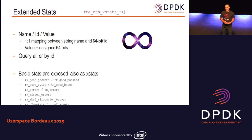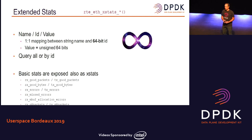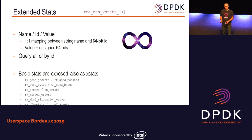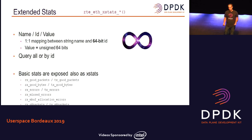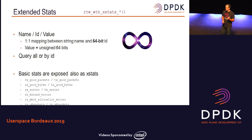I want to talk about another kind of statistic we have in DPDK, which is called extended statistics — xstat. This is pretty much the same as what you have with ETHtool with Linux drivers. What is xstat? There is a name for each statistic, there is an ID — a number — and a very important thing to note is that this ID is 64 bits, and there is a value which is also 64 bits. You can query all the statistics that the driver or port can report, or you can choose which statistic ID you want to get. All the basic statistics which are in the whole structure are also reported in this extended statistic API.